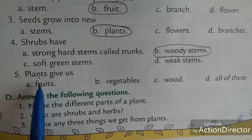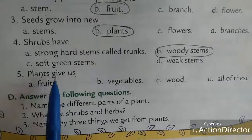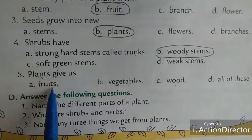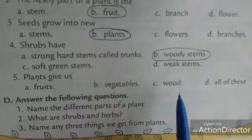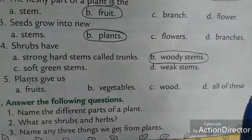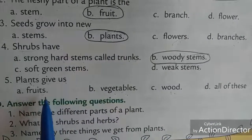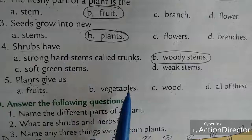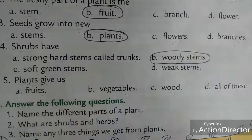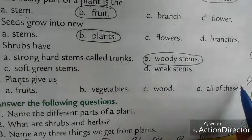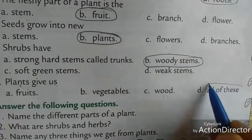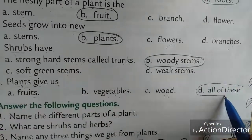Next: plants give us — fruits, vegetables, wood, or all of these? We get all these things from plants — fruits, vegetables, and wood. So circle: all of these.